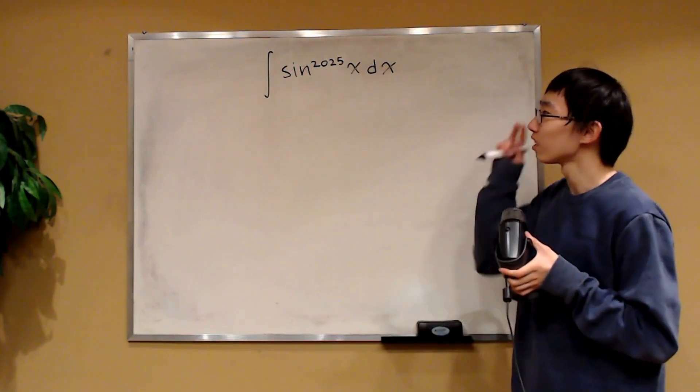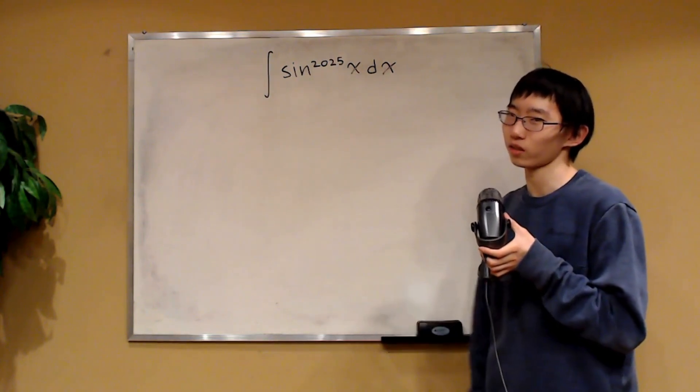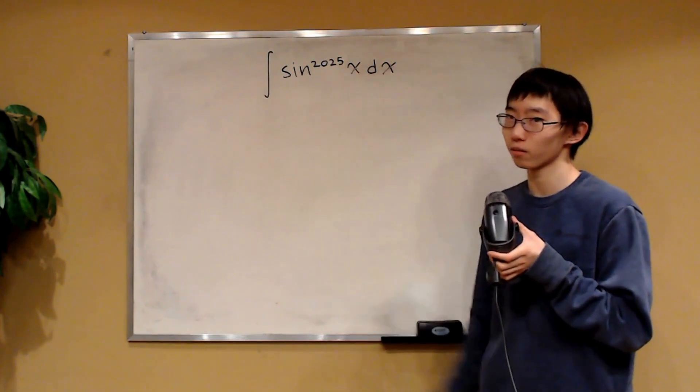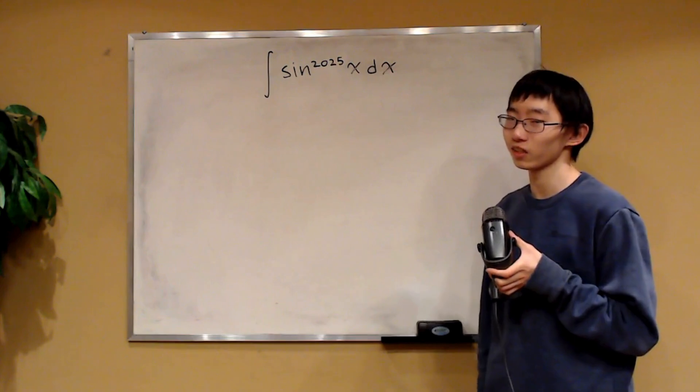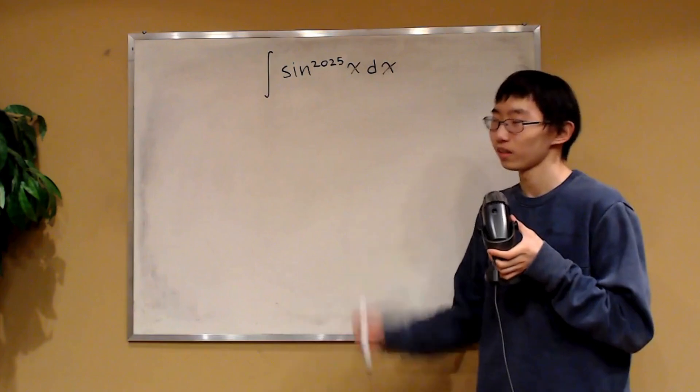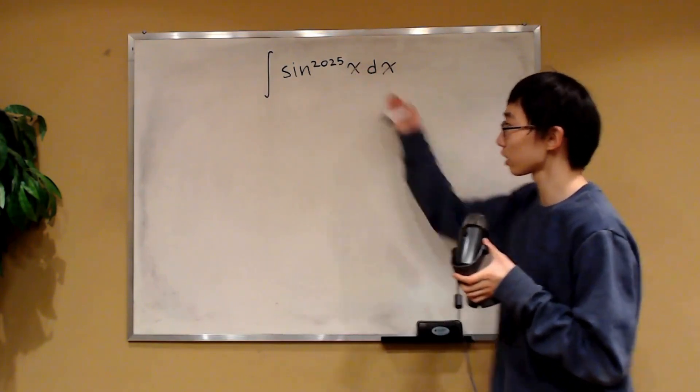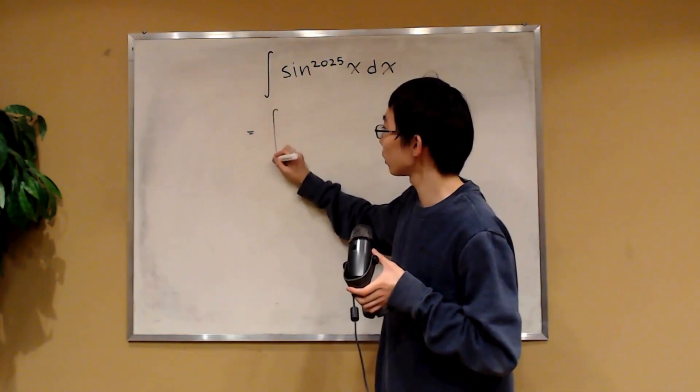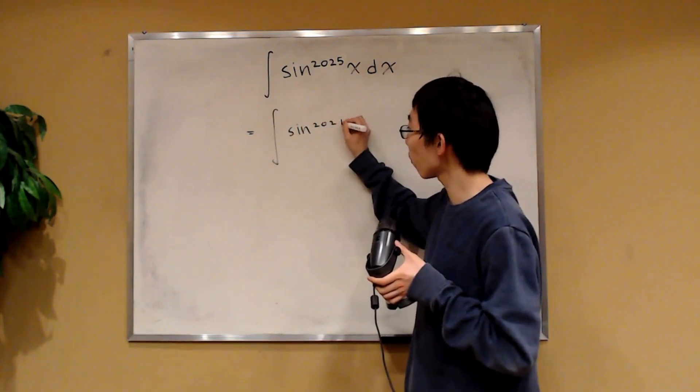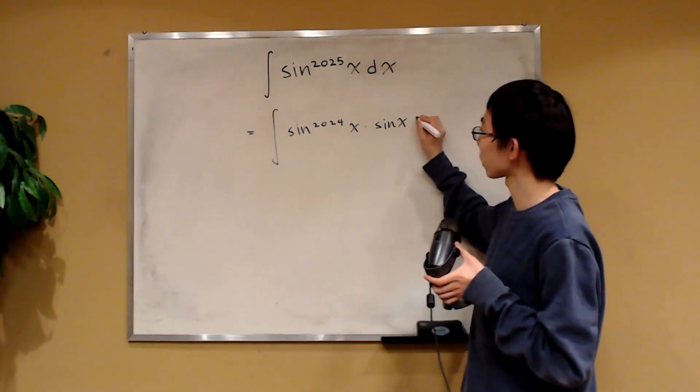Okay, so firstly, what appeals to me is that this power is odd, which is quite annoying. Can we maybe make it even? Because if it's even, we can use the Pythagorean identity, which can help. So how do we break it up? Well, we could try breaking this expression up as the integral of sine to the 2024 of x times sine of x dx.